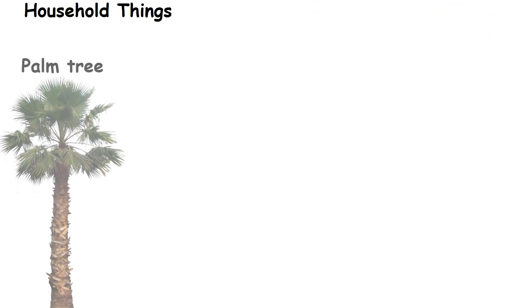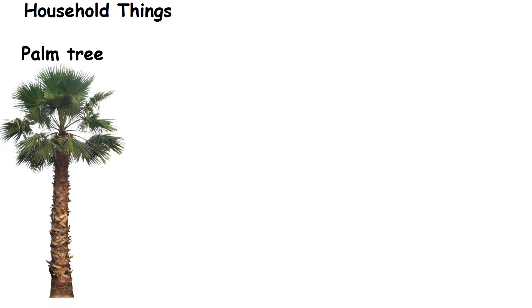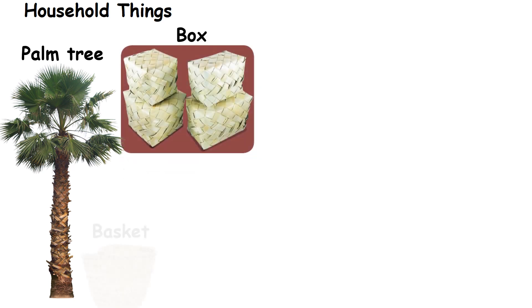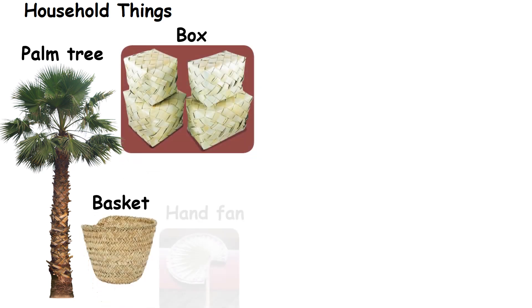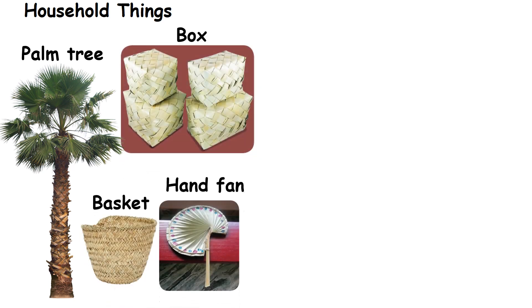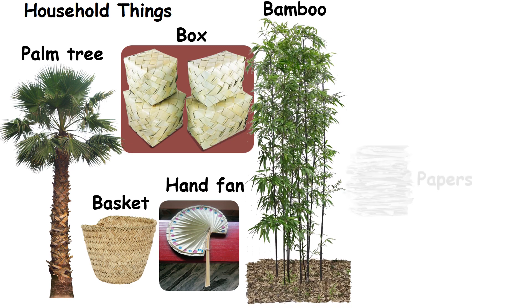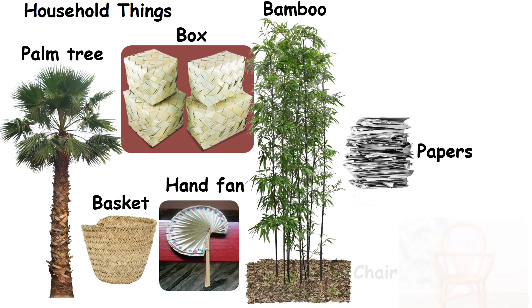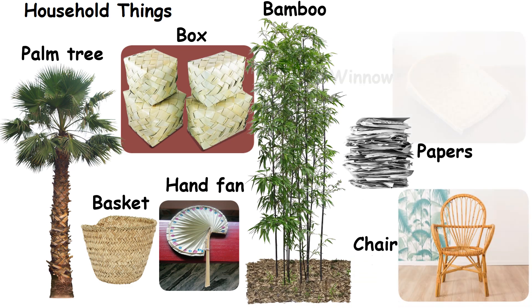We can make household things from plants. Palm leaves are used to make boxes, baskets and hand fans. Bamboo is used to make paper, chairs and windows.